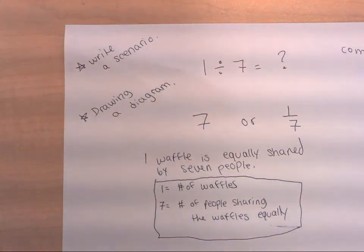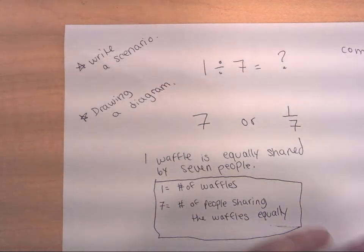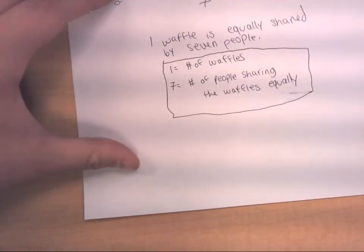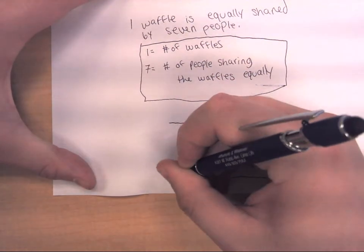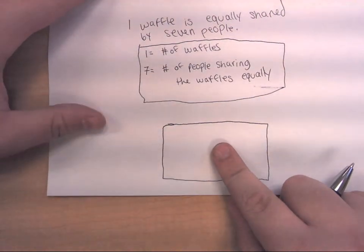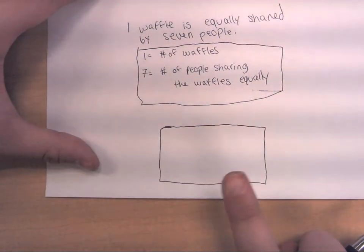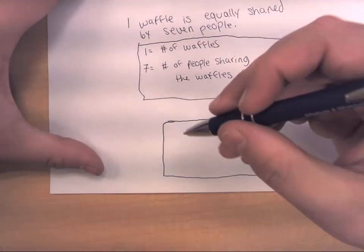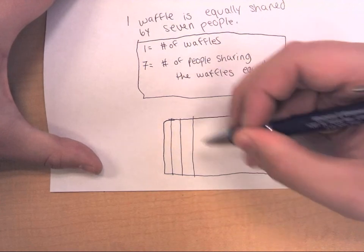Writing a scenario helps clarify whether the one is being divided into seven equal parts or the seven is being divided into one part. The other strategy is drawing a diagram. If one waffle is shared by seven people, I can use a rectangle to represent one whole waffle. It would probably make more sense as a circle, but dividing a rectangle into seven equal parts is easier. So I'll divide this one whole into seven equal parts.